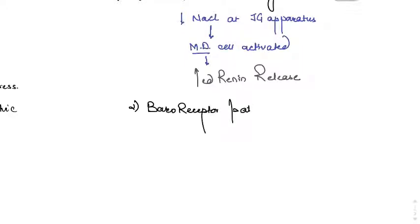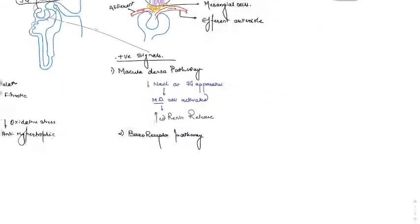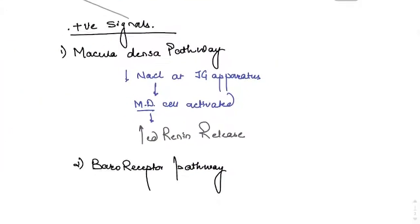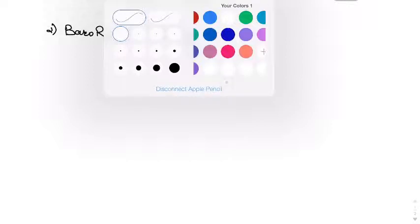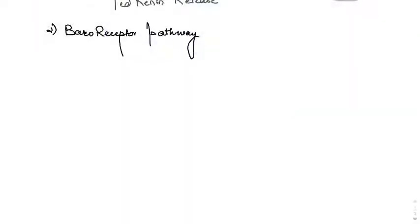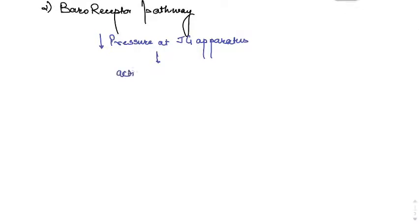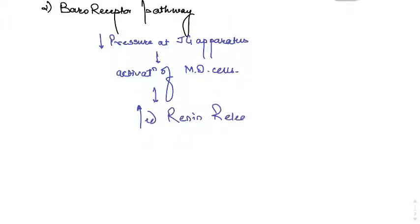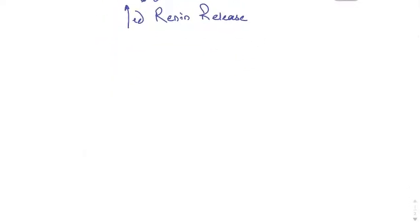The second pathway is the baroreceptor pathway. The juxtaglomerular apparatus is sensitive to changes in renal perfusion pressure. Any slight change leads to autoregulation. A decrease in pressure at the juxtaglomerular apparatus activates the macula densa cells, leading to increased renin release.